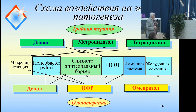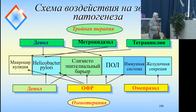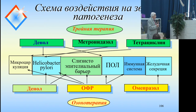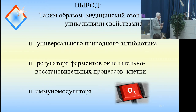Let's ask why this happens. The upper part shows triple therapy; in the center there are six columns for pathology development: microcirculation, Helicobacter pylori, epithelial barrier, immune system, digestion, and secretion. Triple therapy is inefficient for all the components involved in developing the pathology. If we include ozone therapy with omeprazole — no antibiotics, which are contraindicated in mass settings — that is the effect you are seeing on the screen.